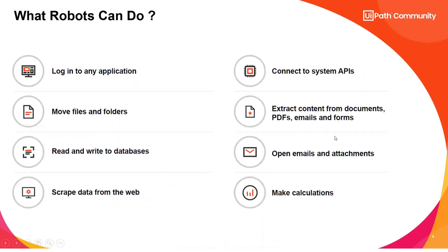These are some examples of what RPA can do. It can log in to any application — desktop, web, or browser-based — the same way you do with a user ID and password. It can open and move files between folders, for example from C drive to D drive.